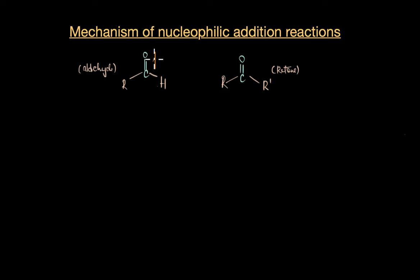The oxygen atom draws electron density away from the carbon atom and this creates a partial positive charge on the carbon atom and a partial negative charge on the oxygen atom.